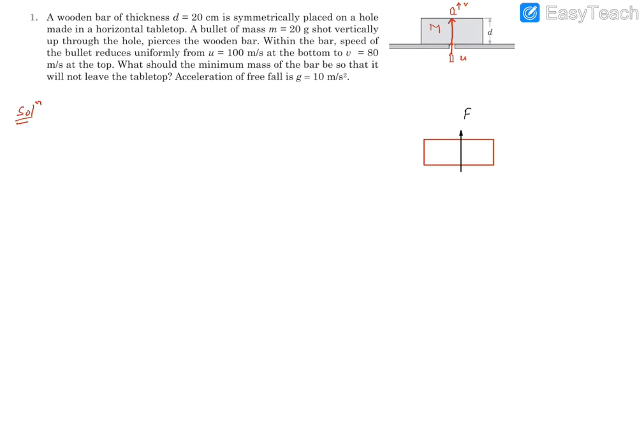We need to find that particular value. Drawing the complete free body diagram, we have Mg acting downward - the mass of the bar times gravity. This force F is being applied by the bullet on this block. There is also a normal reaction N when the block is placed on the tabletop.